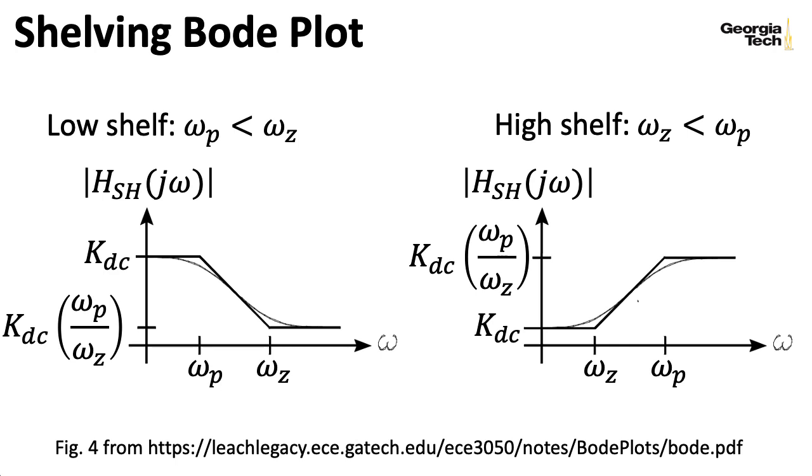So what the Bode plot looks like depends on which frequency is higher. So if the pole frequency is lower than the zero frequency, then we wind up with the low frequencies passing through very well, and the high frequencies not passing through as well in comparison. Whereas if the pole frequency is larger than the zero frequency, then high frequencies pass through well, and lower frequencies tend to be relatively attenuated. In Marshall's notes, he calls the kind of function on the left a low shelf, and the kind of function on the right a high shelf, but this terminology isn't necessarily universal.